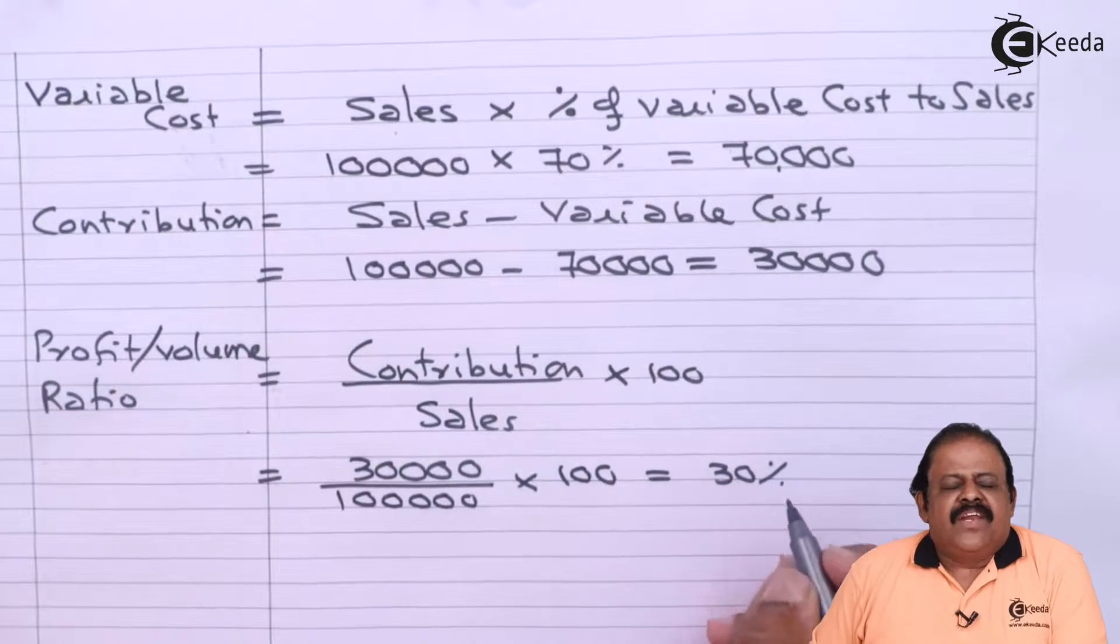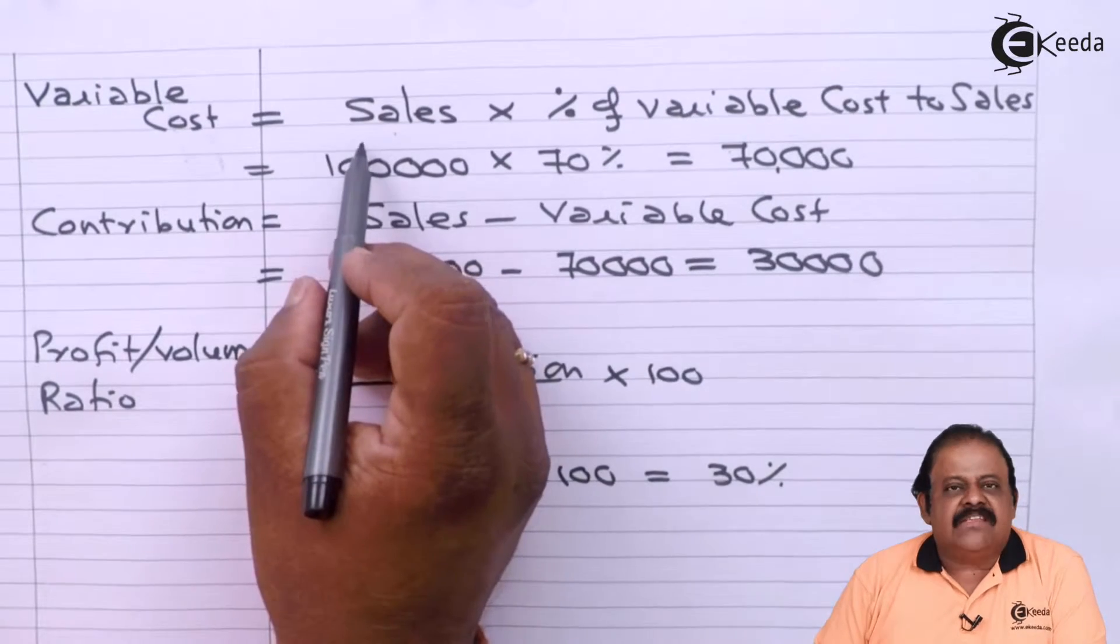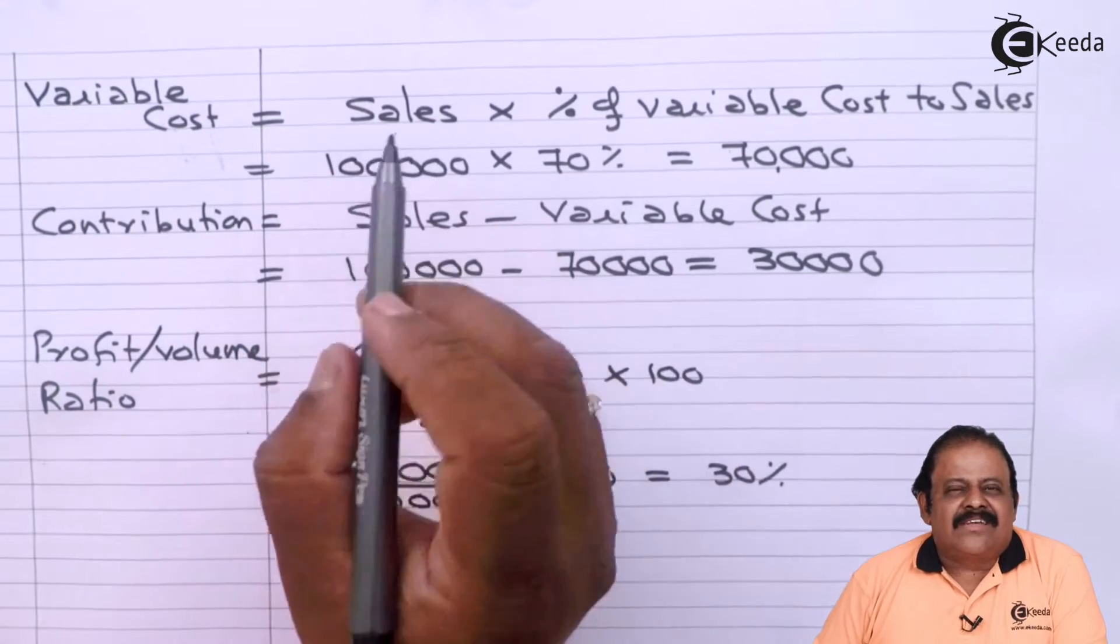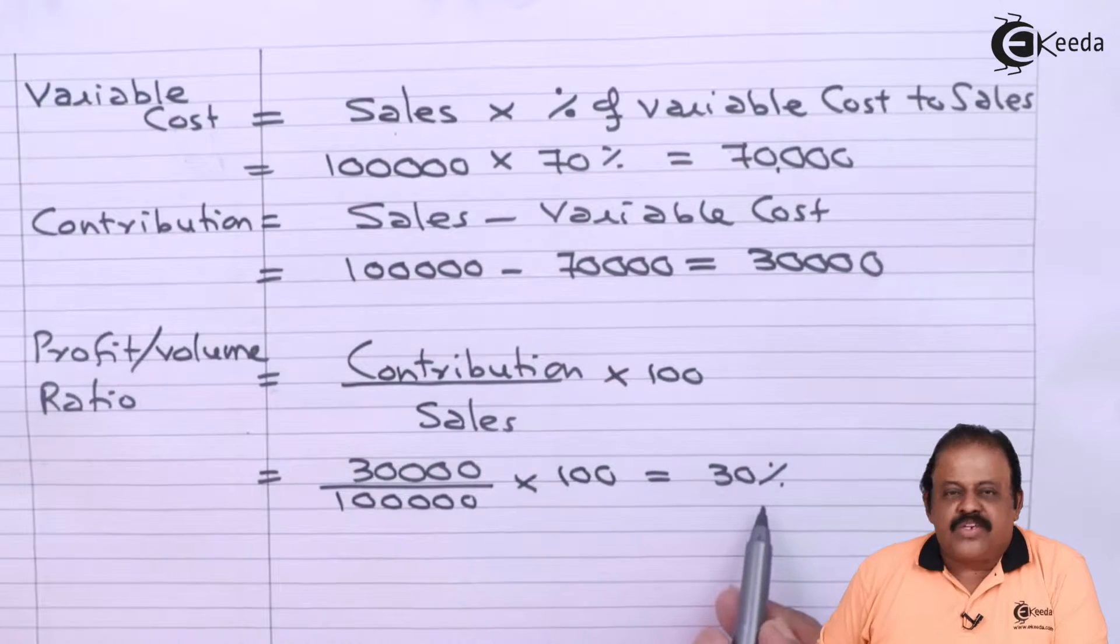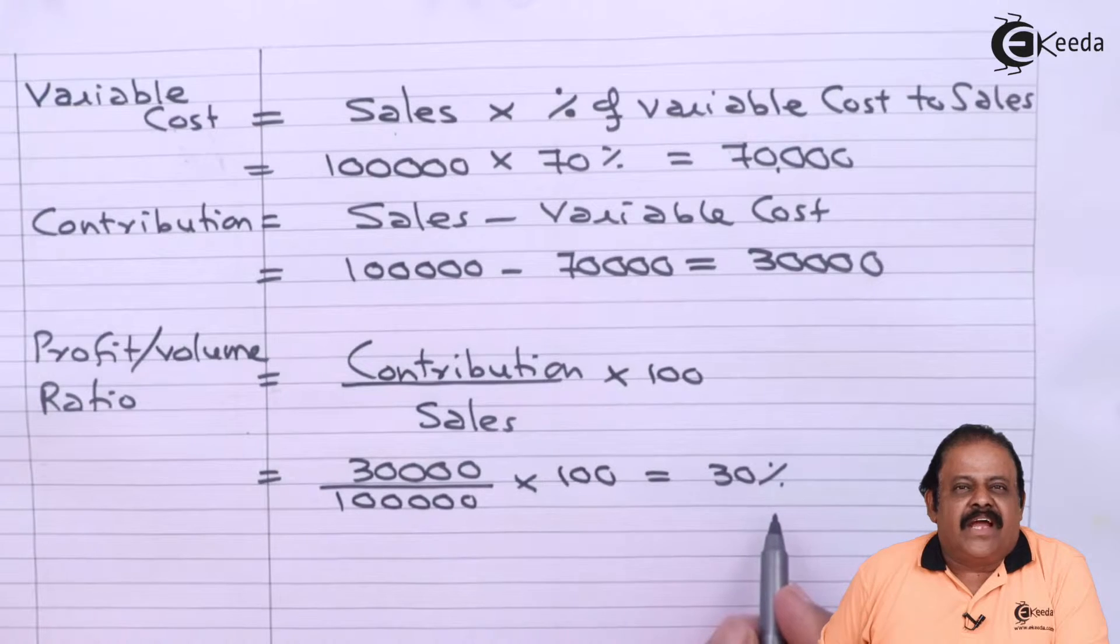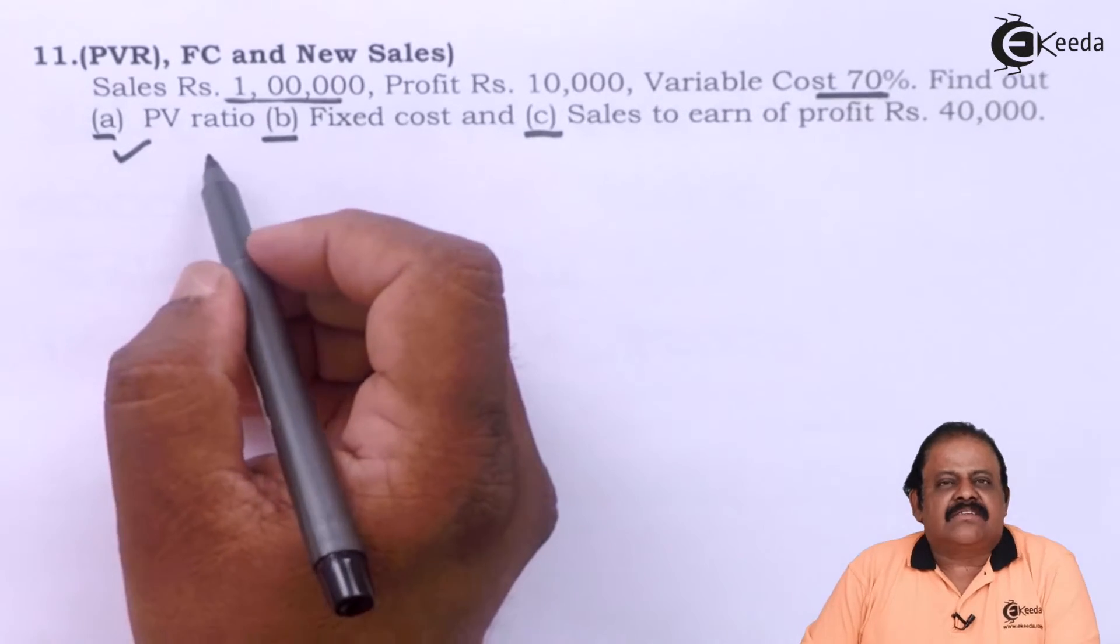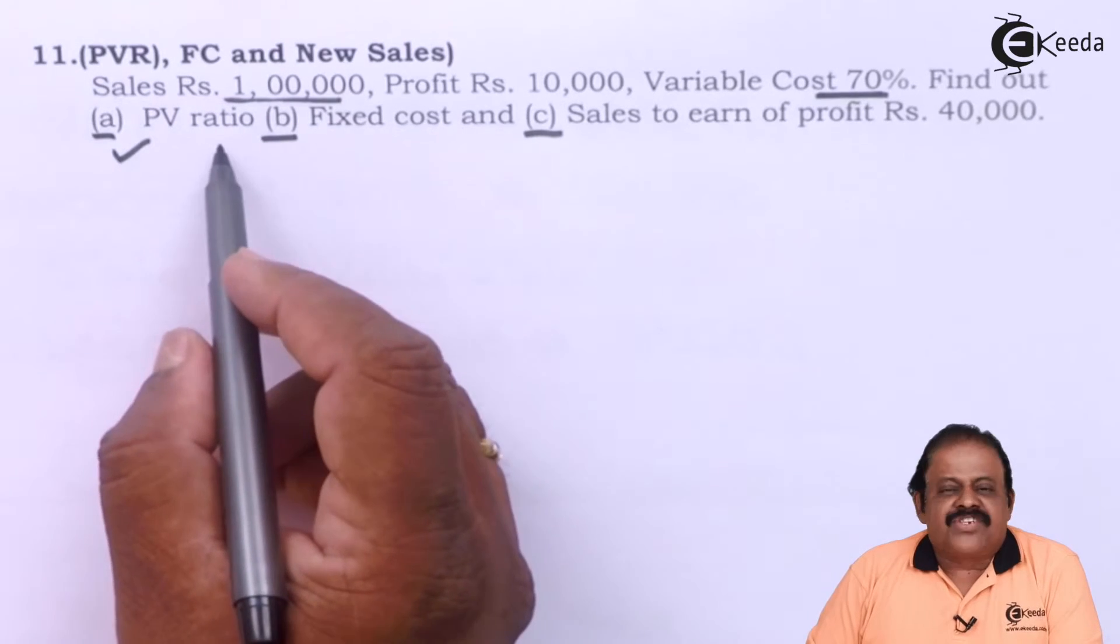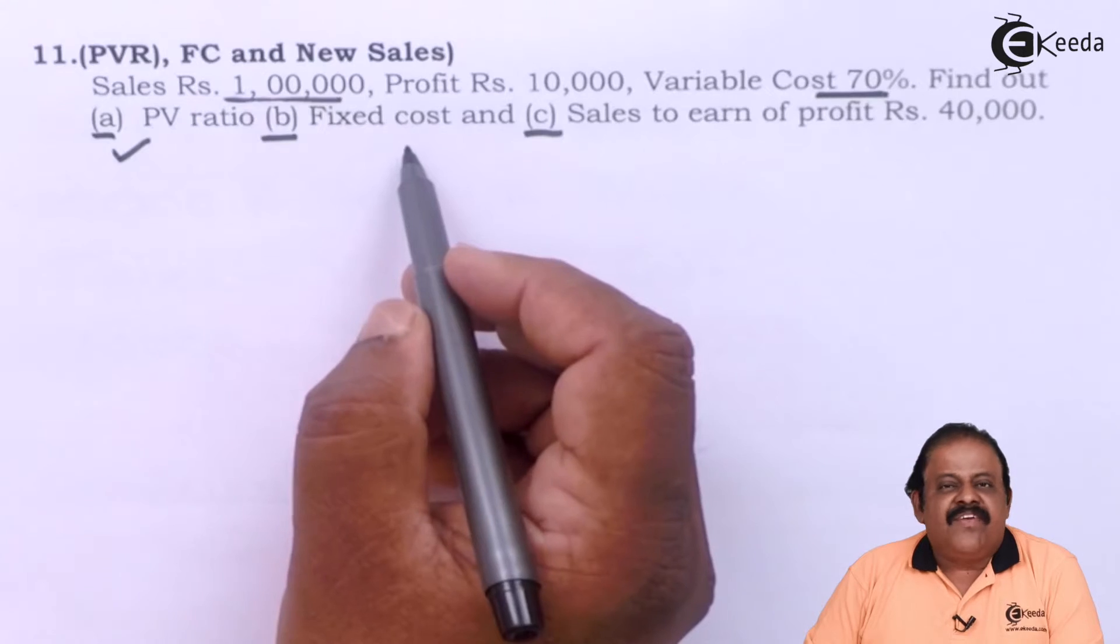So if in a question they have given variable cost is 70 percent of sales, that means we can understand 100 minus 70, 30 percent will be profit volume ratio, that is contribution. Because sales minus variable cost we get the amount of contribution. So this is for the first sub question, PV ratio. Second, now they are asking us to find out fixed cost.